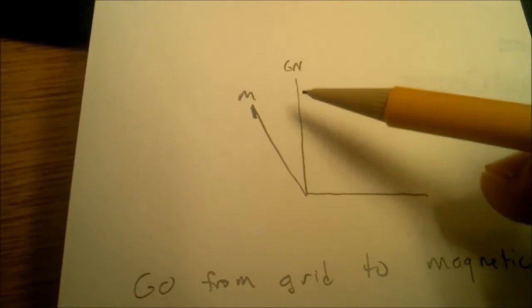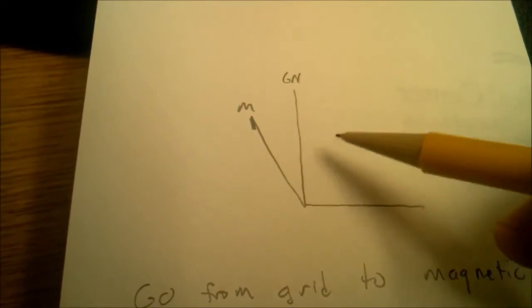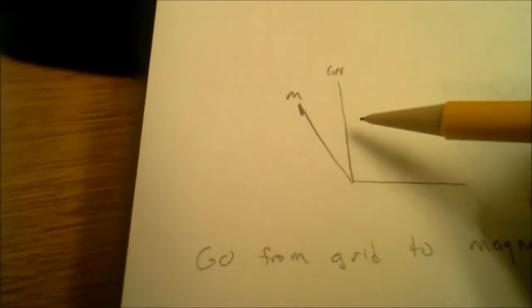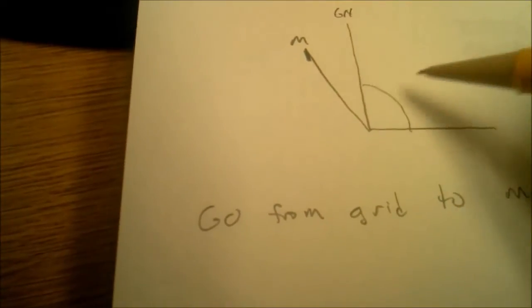When I say grid, I'm talking about our map. Anything measured on a map, azimuth-wise, is called grid north. So what I'm going to do is draw my angle here. It says 38 degrees.